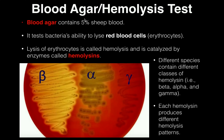The hemolysis test is run on blood agar, and blood agar is going to look like a TSA plate except it's going to be completely red. The red color is due to the fact that it contains five percent sheep blood — specifically, the red blood cells give it its red color.